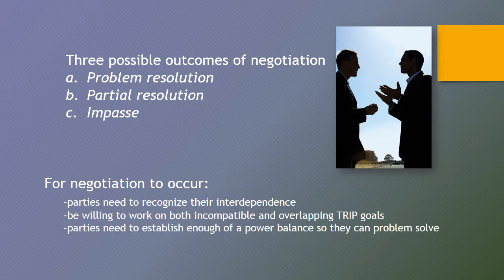Three possible outcomes of negotiation are problem resolution, partial resolution, and an impasse. For negotiation to occur, a certain communication climate has to be present. The parties need to recognize their interdependence, be willing to work on both incompatible and overlapping TRIP goals, and establish enough of a power balance so that they can problem solve.